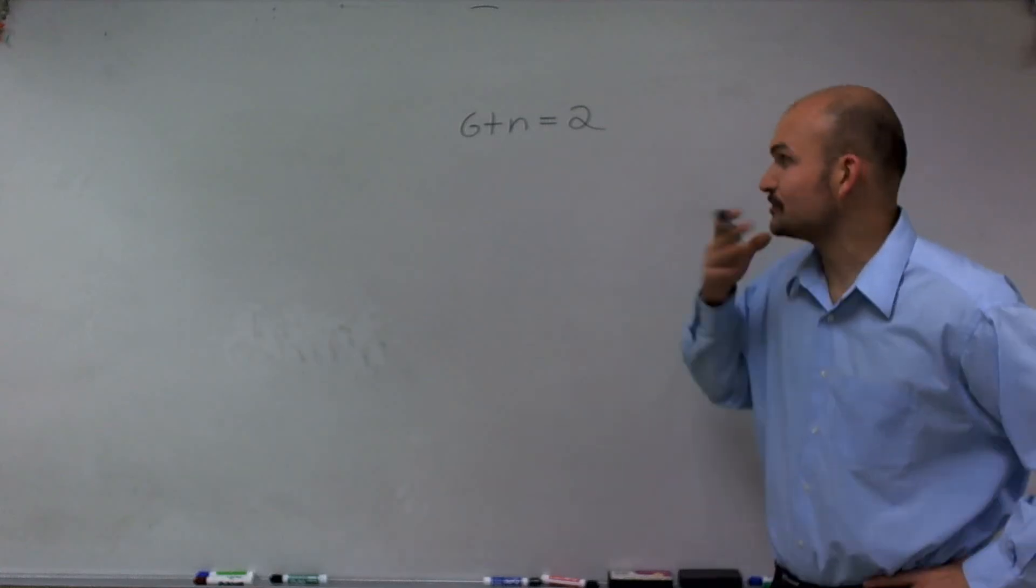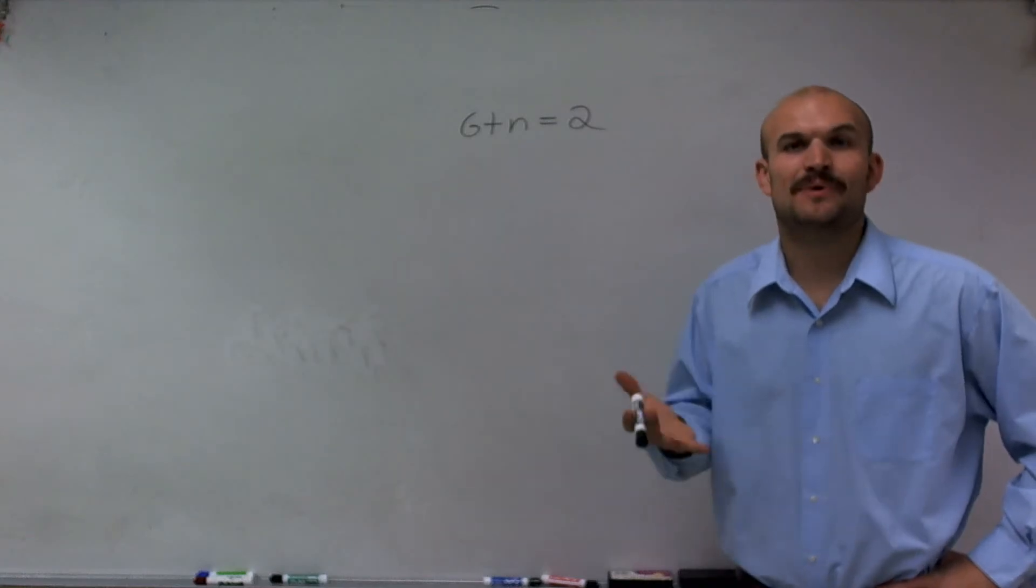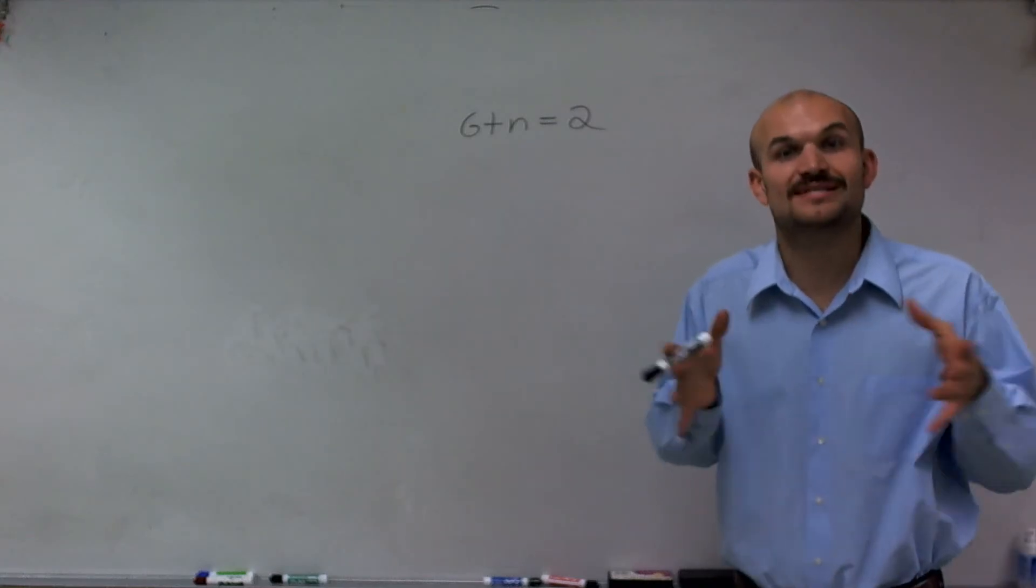So what we want to do to solve for n is determine what's happening to the n to get it by itself. We need to find the value of n so it's isolated by itself.